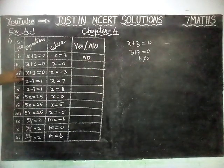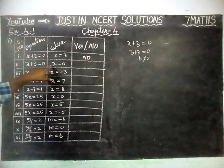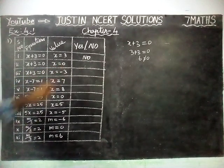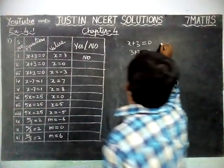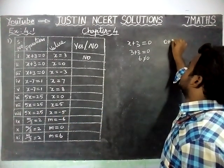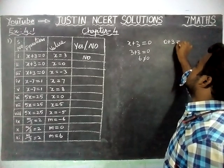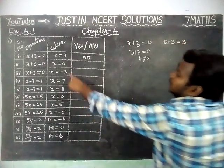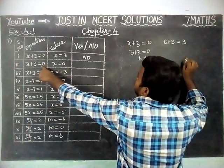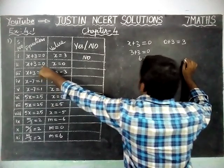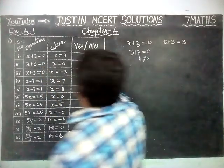Second question: X plus 3 equal to 0, X value is equal to 0. Now we are going to substitute — 0 plus 3 is equal to 3, but here they have given 0 plus 3 equal to 0. So this is also no.